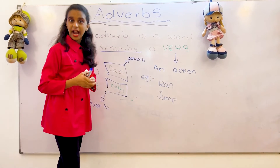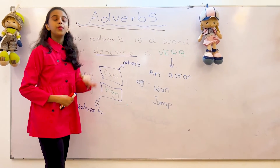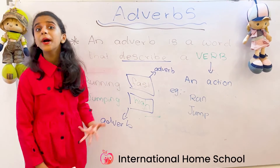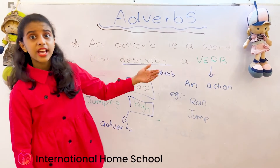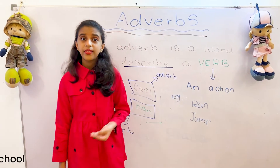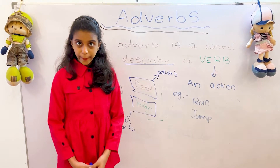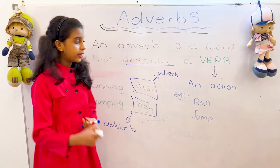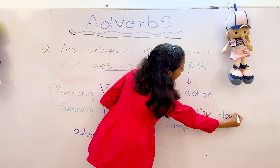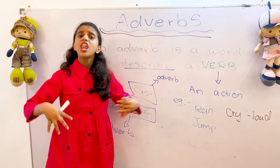I hope you understood what an adverb is. So again, an adverb is a word that we use to describe a verb. To talk more about adverbs, we can take verbs such as crying and walking. So we can say the baby is crying loud. How is the baby crying? The baby is crying loud.